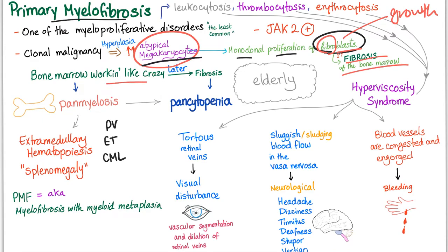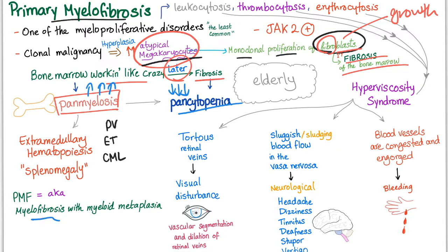The bone marrow is working like crazy in the beginning, then later there is fibrosis. Early on, there is panmyelosis — increased red blood cells, platelets, and white blood cells. Later, there is pancytopenia — decreased red blood cells, white blood cells, and platelets. That is why it is also called myelofibrosis with myeloid metaplasia. There is extramedullary hematopoiesis, leading to splenomegaly.